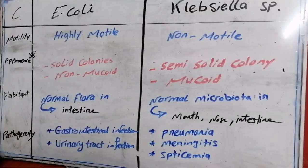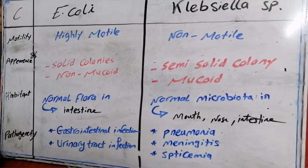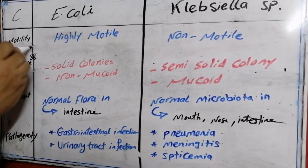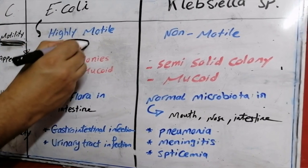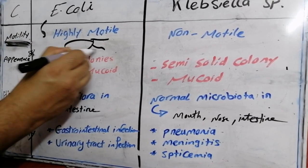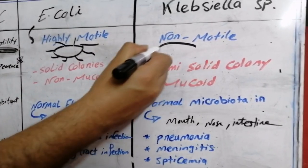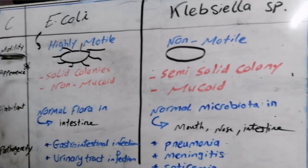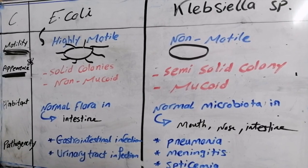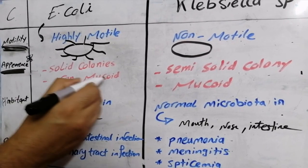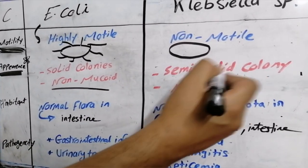Here is the main difference between E. coli and Klebsiella. E. coli has the ability to move due to the presence of mini-flagella and fimbriae, while Klebsiella is non-motile. In terms of appearance, E. coli shows solid colonies and is non-mucoid.